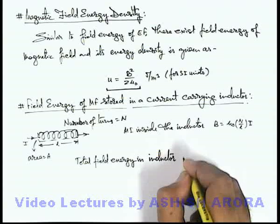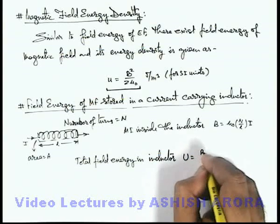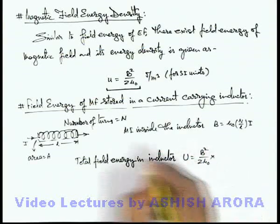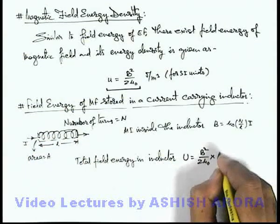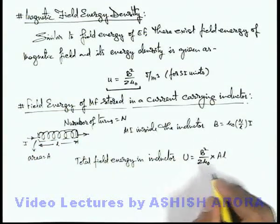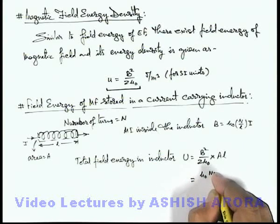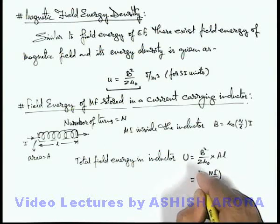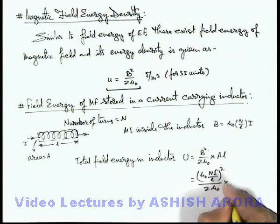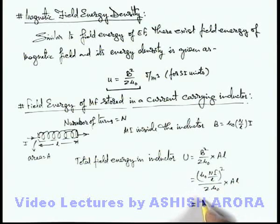This is equal to B squared by 2μ₀, which is the energy density, multiplied by the total volume of inductor, which is AL. So if we substitute the value of induction here, we can see it is μ₀ NI by L, whole squared, by 2μ₀ multiplied by AL.